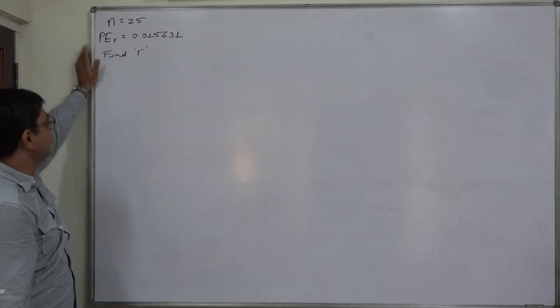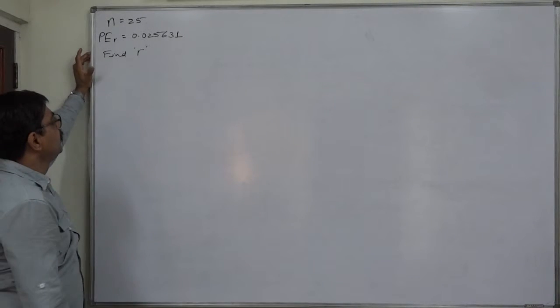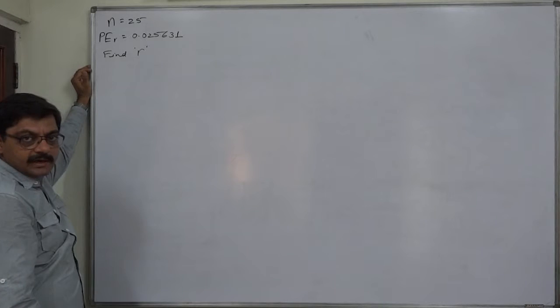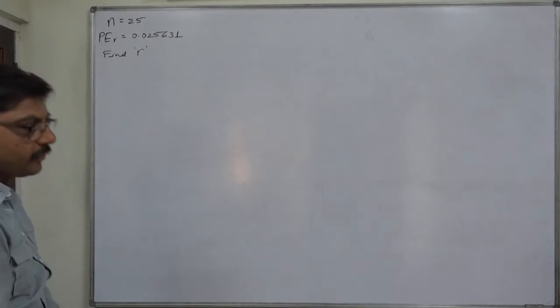We have two pieces of information: sample size 25 and probable error 0.025631. We need to calculate the coefficient of correlation.